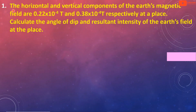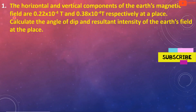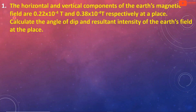The horizontal and vertical components of earth's magnetic field are 0.22×10⁻⁴ tesla and 0.38×10⁻⁴ tesla respectively at a place. Calculate the angle of the dip and the resultant intensity of earth's field at the place. The horizontal component is 0.22×10⁻⁴ tesla and the vertical component is 0.38×10⁻⁴ tesla.